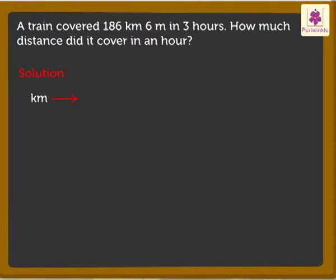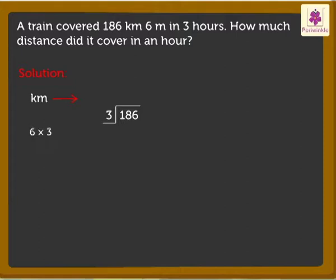We start with 186 kilometers. Firstly, compare the digits. 1 is smaller than 3, so we consider the next digit, that is 8 also. Now we get the number 18. Compare the digits — 18 is greater than 3. Hence, we divide. As 6 times 3 is equal to 18, we place 6 in the tens place in the quotient, and write the number 18 under 18. Now subtract 18 from 18, which is equal to 0.